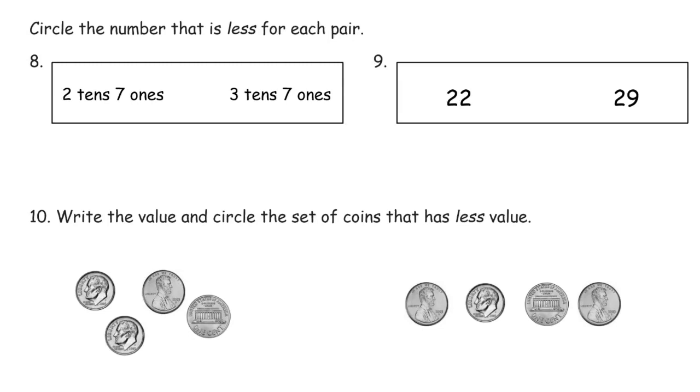And now circling the number that is less for each pair. Two tens, seven ones. I could just write this in a place value box if I don't like looking at unit form. Because sometimes they mix up the order of the units. We're used to seeing two and seven and thinking 27, but sometimes they put the ones first and the tens later just to make sure we're paying attention. Three tens, that's three here where the tens go, and seven ones. So here I can see I have 27 and 37, and I want the number that's less, so that's 27.